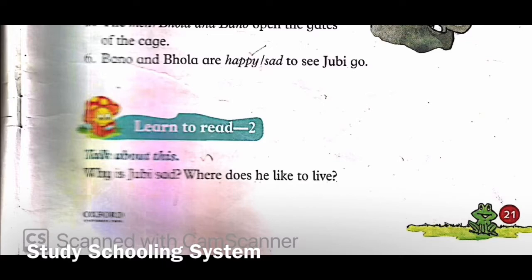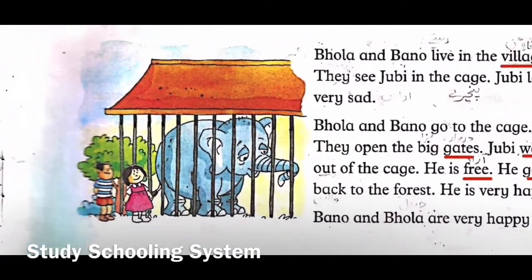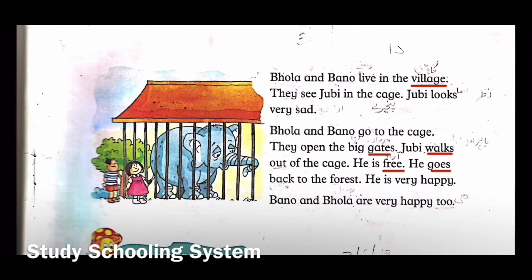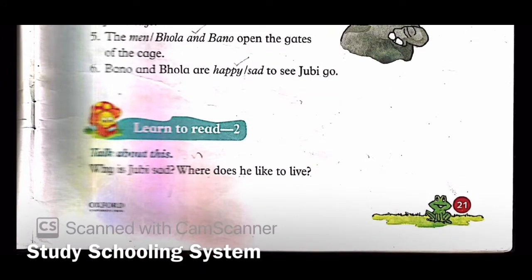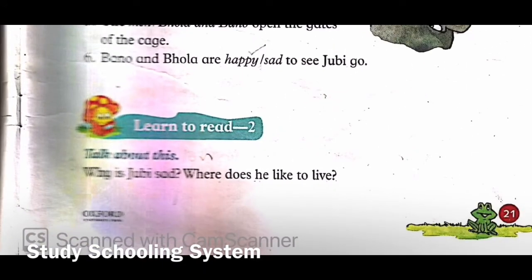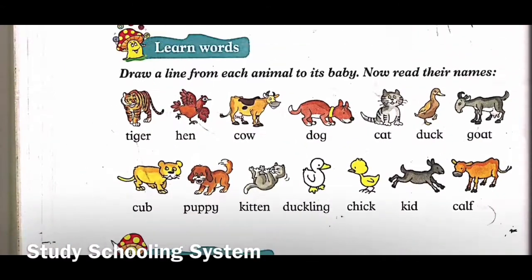Why else is he sad? Because he is not with his family. We discussed that the lion was with his family in the forest - that is why he is happy and likes to live there. Jubi must be very sad in the cage because he is away from his family, he has no one, he is alone. You don't have to write this answer - we just had to discuss it.